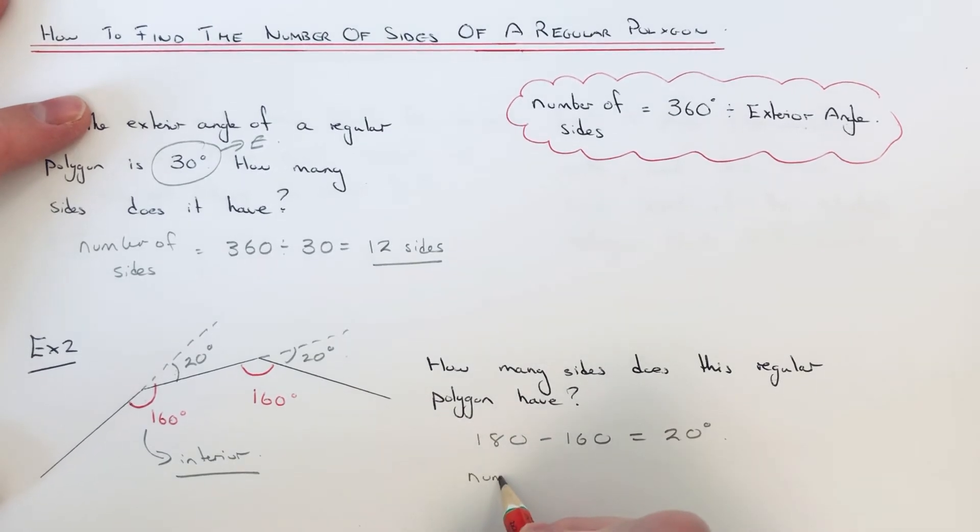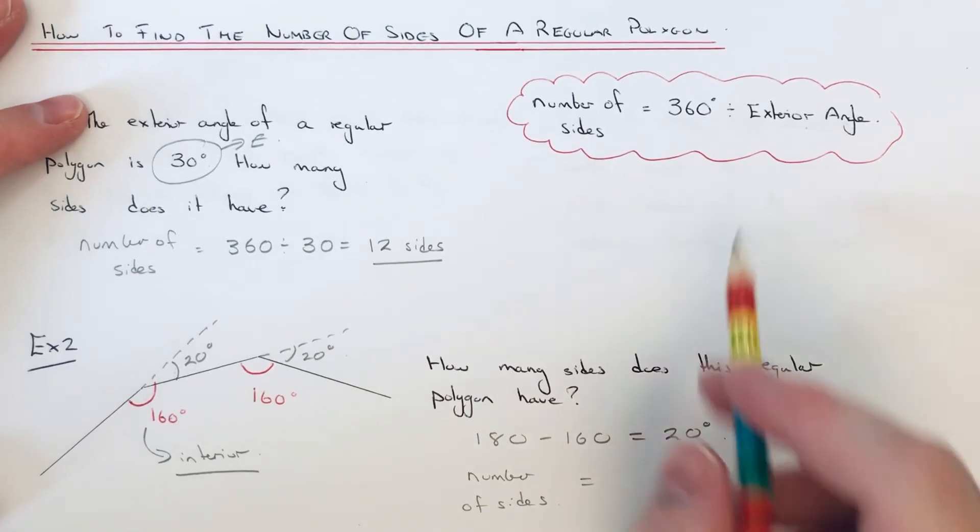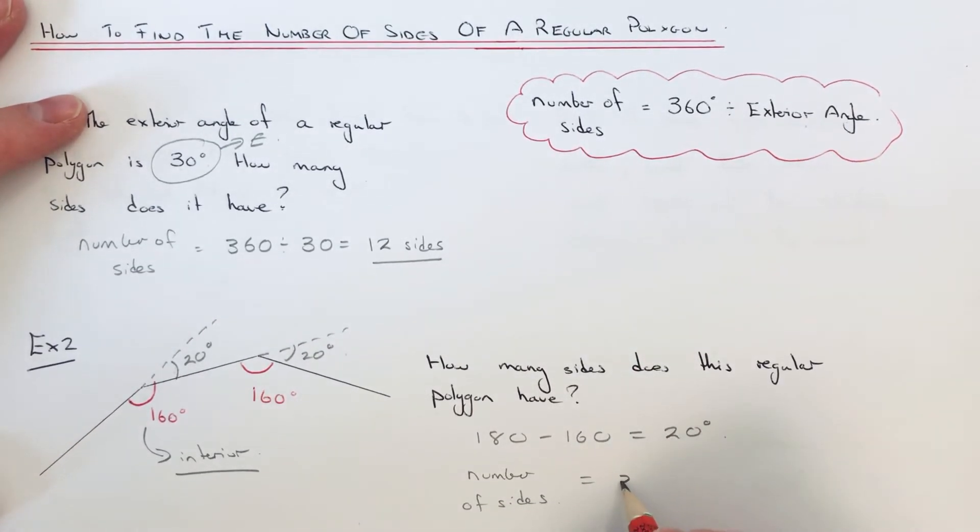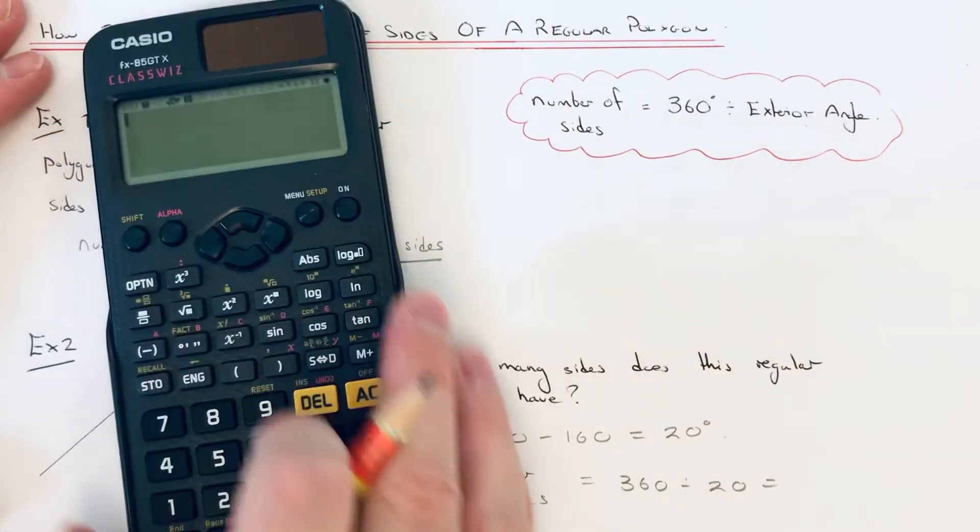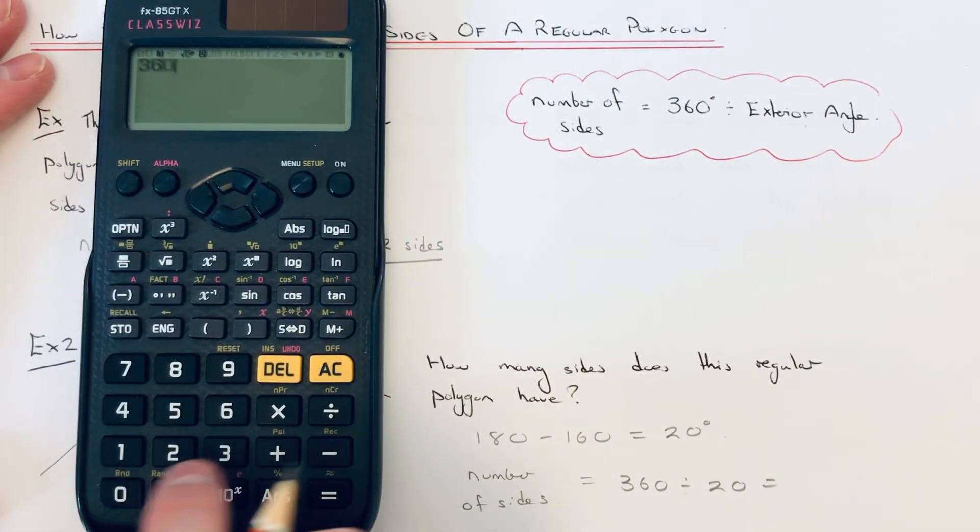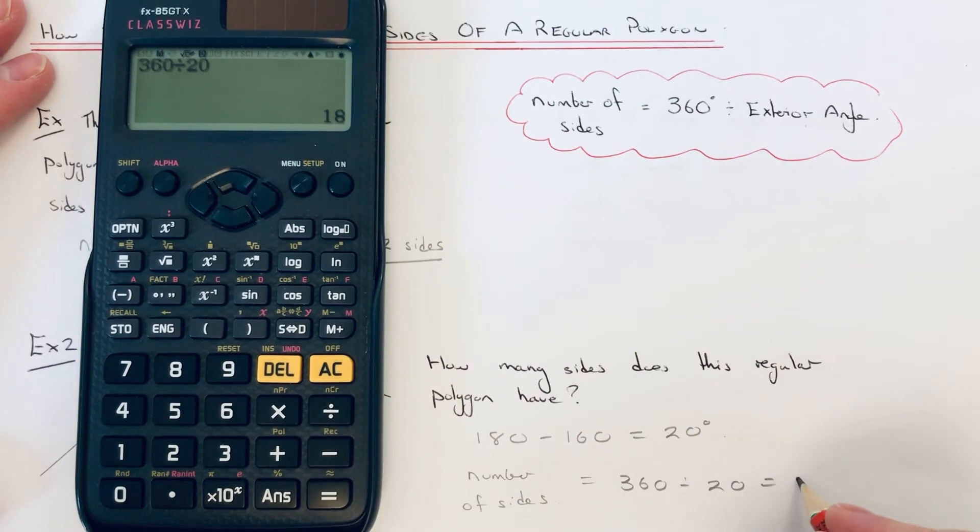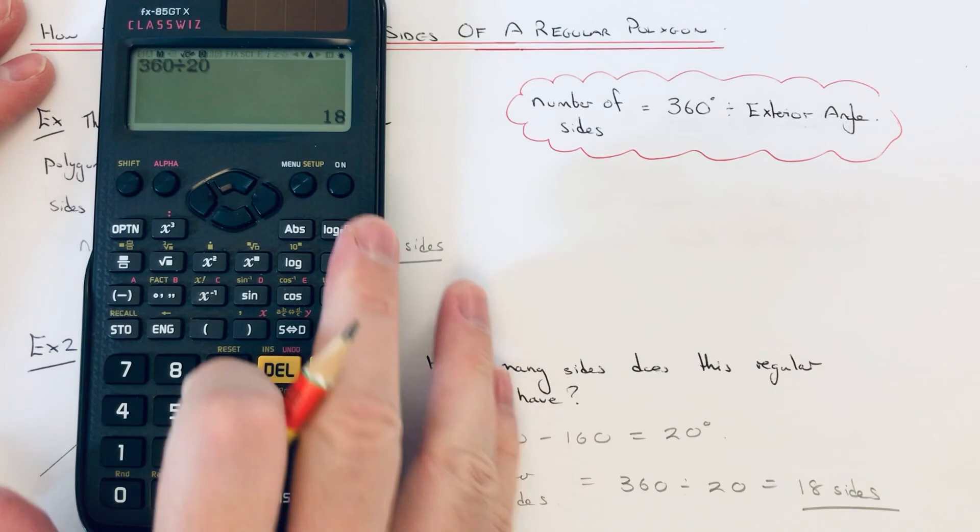We can now work out the number of sides because we have the exterior angle. We just put it into the formula above, so we do 360 divided by 20. 360 divided by 20 is 18, so our regular polygon has 18 sides.